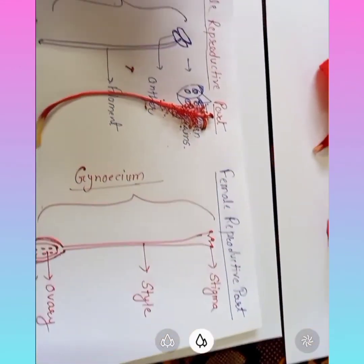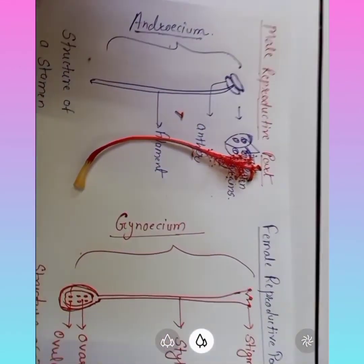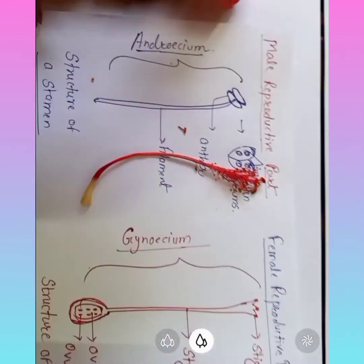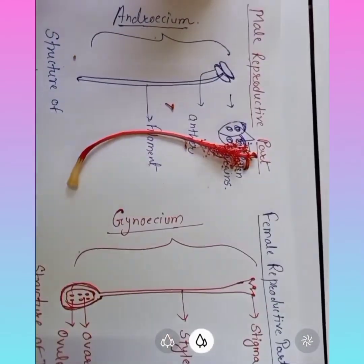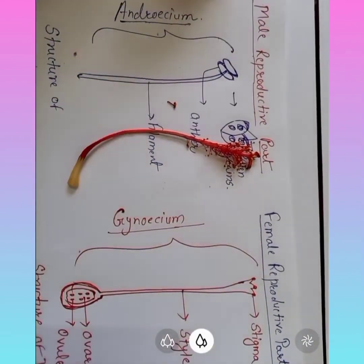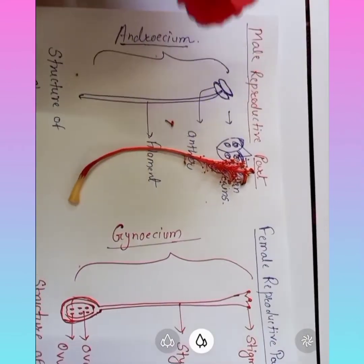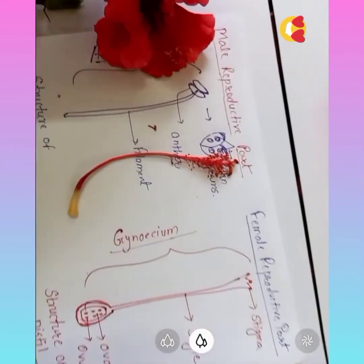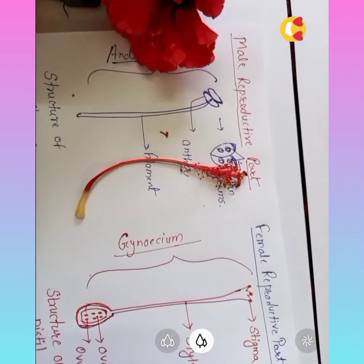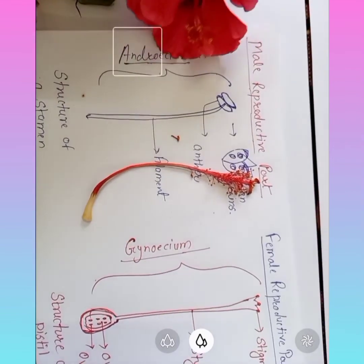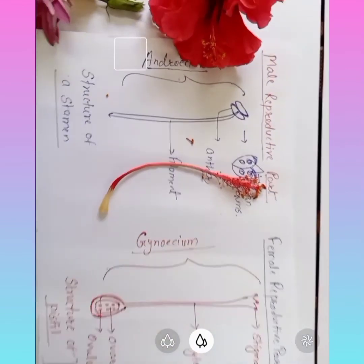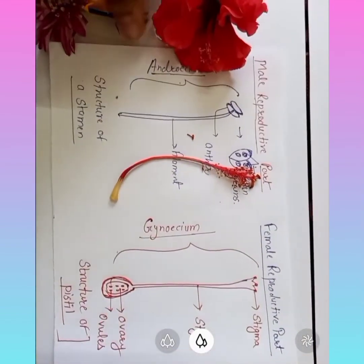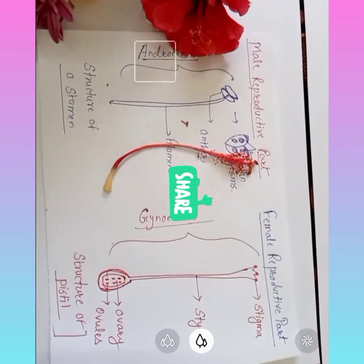So here we are done with the structure of the flower. We have learned both the male and female reproductive parts. You can do this activity at home — just take a hibiscus flower, dissect it, and separate each and every whorl of the plant. You can even make a video of it.